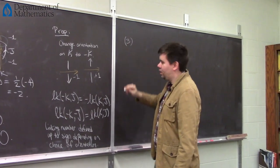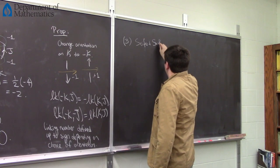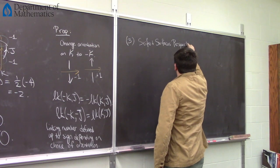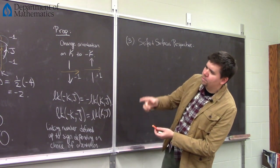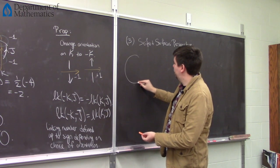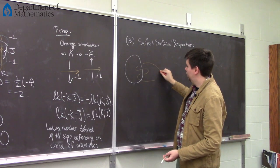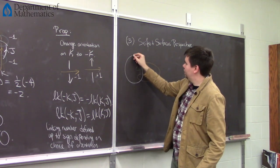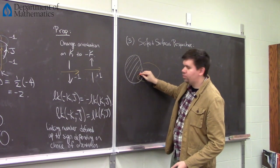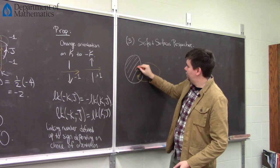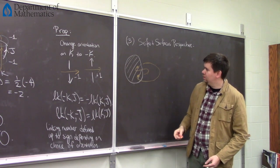Here's a third way to calculate the linking number, and this is a perspective using Seifert surfaces — a more surface perspective. You can think of the white component as bounding a disc. What orange is doing is it's coming through and passing through the disc — it hits the disc and passes through once, then hits the disc and passes through again, hitting it twice. This corresponds with the linking number being two.